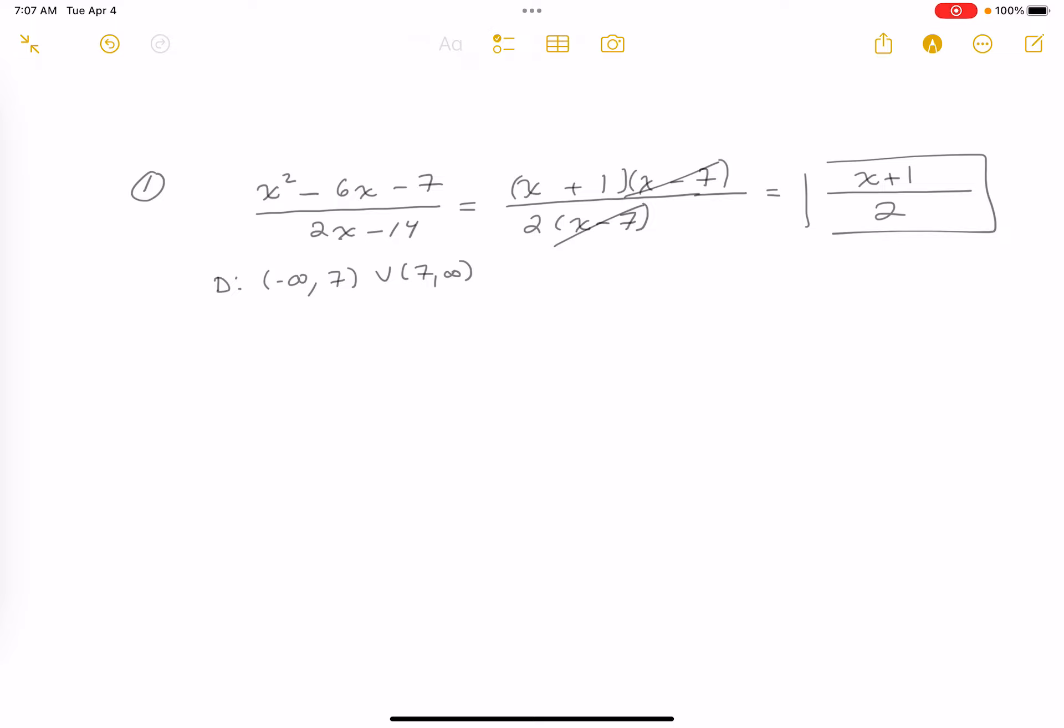Now someone can say, domain of this thing is all real numbers. That's not true. This is conditional that the domain remains this over here. So the way this reduction works is this is true provided that x is not equal to 7. I'm going to write that a little bit differently over here. I'm going to say this is true provided x is not equal to the number 7. All right, thank you.